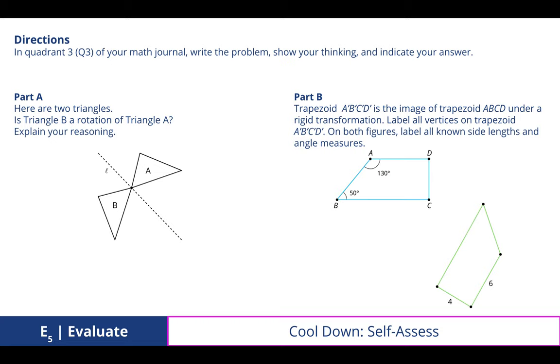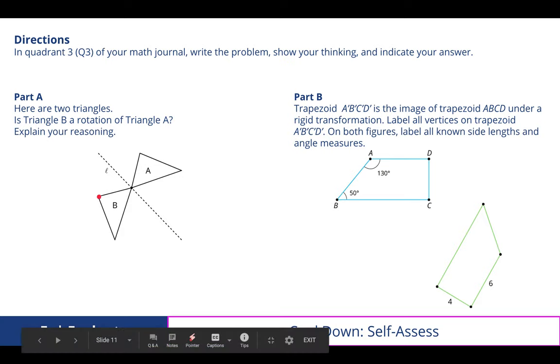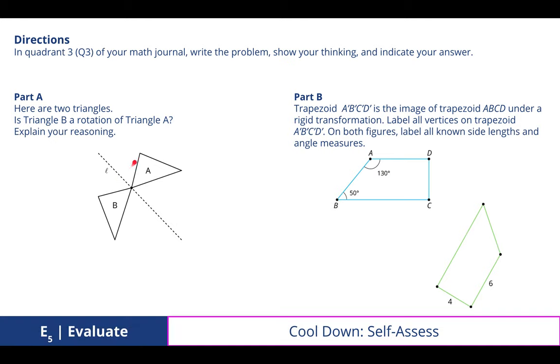In quadrant three of your math journal, write the problem, show your thinking, and indicate your answer. In part A, we were looking at this line of reflection, and we were determining if this is a rotation, even though it has that line of reflection, kind of like that other cool-down activity that we did in an earlier lesson. But as we look closer at this, we notice that each of the vertices are equidistant from that line of reflection in the same spot on the other side. Therefore, this is not a rotation.